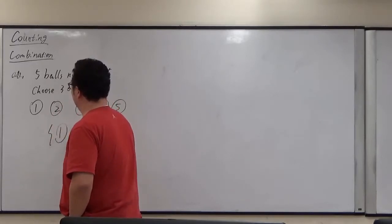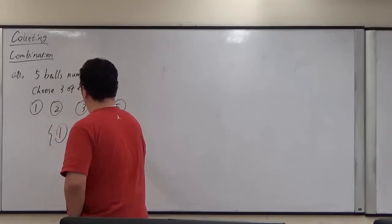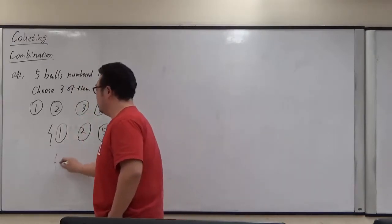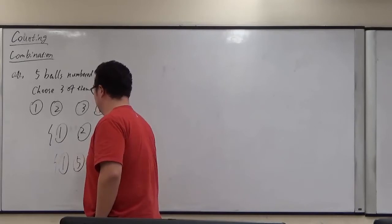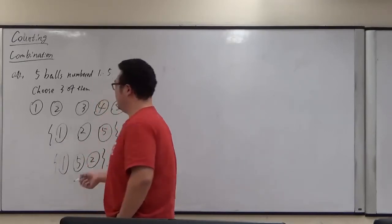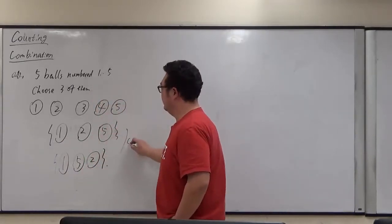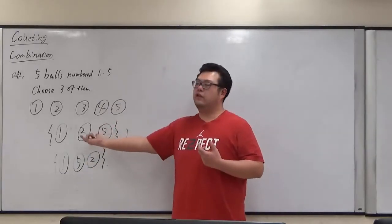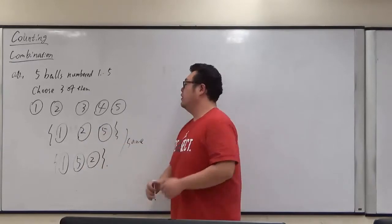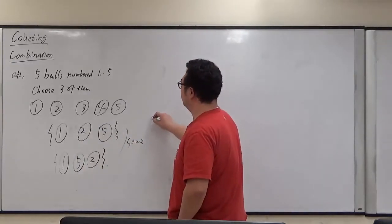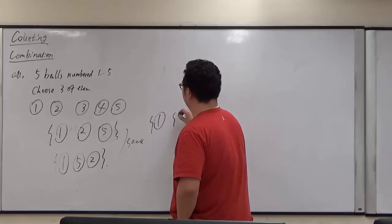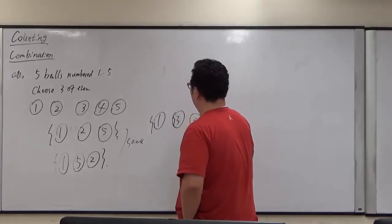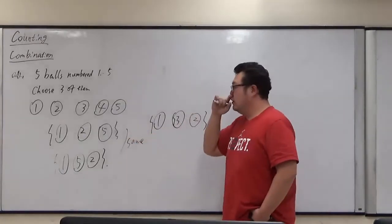The way we choose 1, 2, 5 and the way we choose 1, 5, 2 basically is the same because we do not care about the order. The ball over there, three balls is the same as those three. But the only thing is 1, 3, 2 will be just another different case.